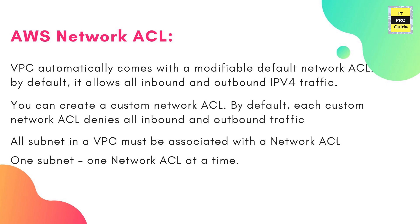If you have a virtual machine running on the default network ACL, RDP works straight away without any configuration on the network ACL — you don't need to open any ports. But if it is running on a custom network ACL, then you need to open the port for RDP access. So this is the difference and an easy way to understand.